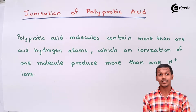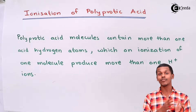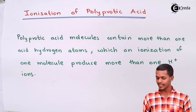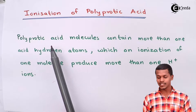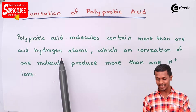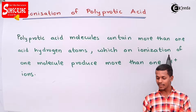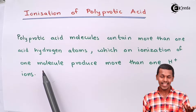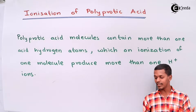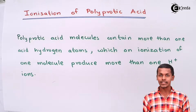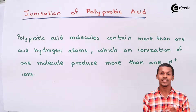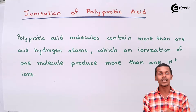A polyprotic acid molecule contains more than one acid hydrogen atom. The ionization of one molecule of the acid will produce more than one H+ ions. Those acids that produce more than one H+ ions, or acid protons, are known as polyprotic acids.